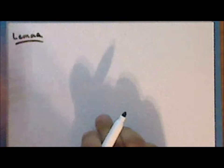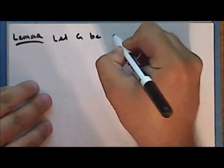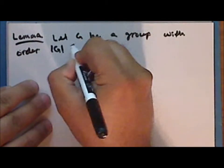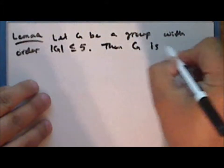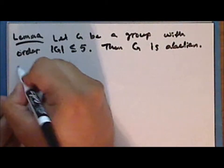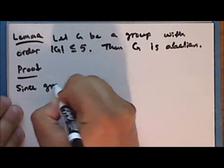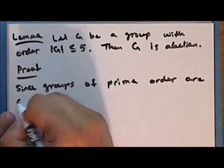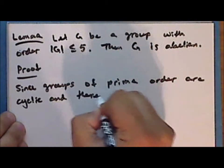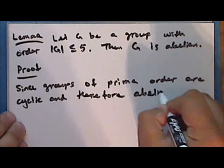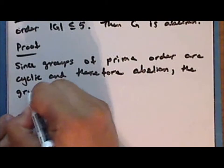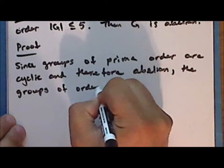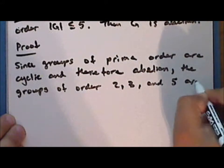The next exercise we'll state as a lemma: Let G be a group with order less than or equal to 5; then the group G is Abelian. Proof: Since groups of prime order are cyclic and therefore Abelian, the groups of order 2, 3, and 5 are Abelian.